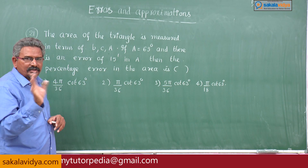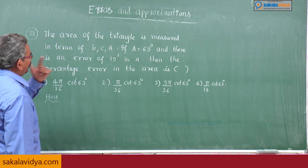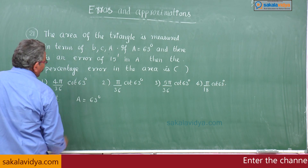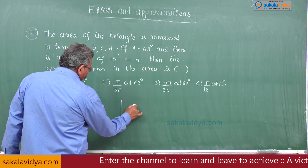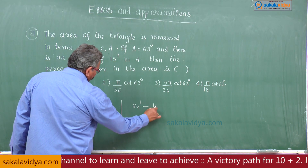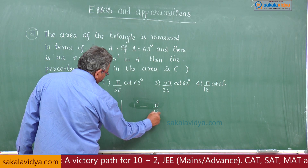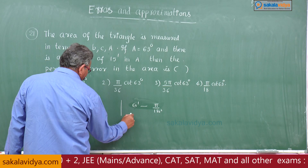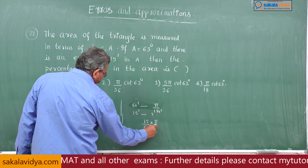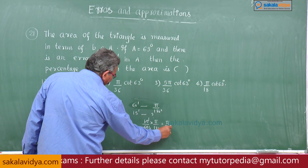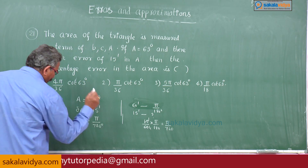Here, b and c are constants while capital A is varying. A is given as 63 degrees and the error in A, delta A, is equal to 15 minutes. Let us convert into radians. Since 1 degree = π/180 radians, for 15 minutes: 15/60 × π/180 = π/720. So delta A = π/720.